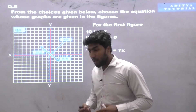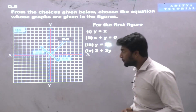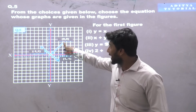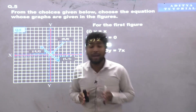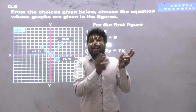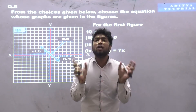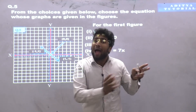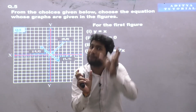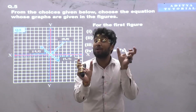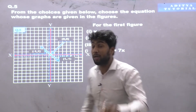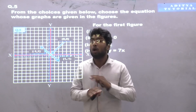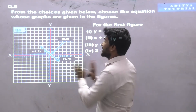Here we have a coordinate. The coordinates are (0,0), (1,-1), and (-1,1). These are the x-values and y-values. We need to substitute the values into the left-hand side and check whether left-hand side is equal to right-hand side. If they are equal, then the equation's graph is this one. If not, then that equation doesn't satisfy this graph.